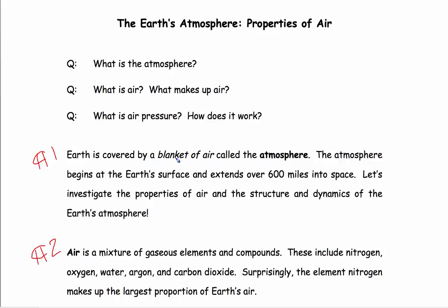Earth is covered by a blanket of air called the atmosphere. Basically the atmosphere is layers of air made up of matter, and those would be molecules. The atmosphere begins at the Earth's surface and extends over 600 miles up towards space. Let's investigate the properties of air and the structure and dynamics of Earth's atmosphere.